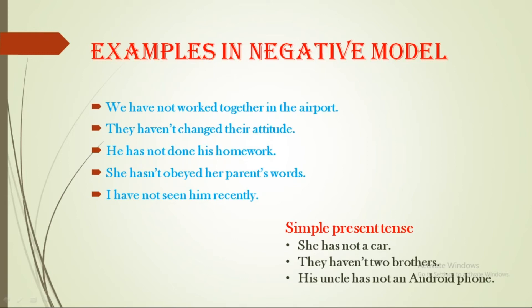I have mentioned one way, but let me explain in simple sentences. Negative: 'She has not a car.' Another method: 'She doesn't have a car.' Similarly: 'They haven't two brothers' or 'They do not have two brothers.' And: 'His uncle has not an android phone' or 'His uncle does not have an android phone.' So double ways are possible for making a negative in simple present tense when using 'have' or 'has' as a main verb.